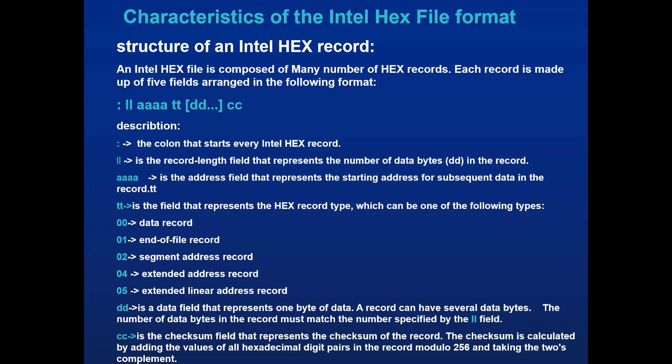Next is DD — the data field, which contains the actual data. How many data bytes are in the record depends on the LL length field. The last field is the checksum, represented as CC. That record checksum is based on modulo 256, generating a one-byte format.